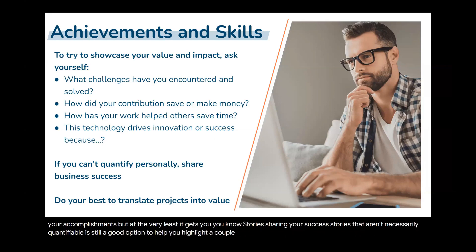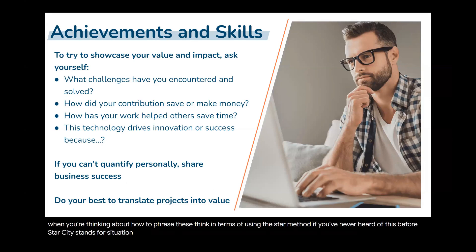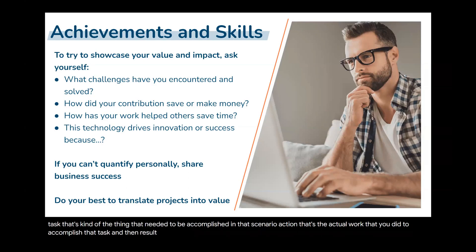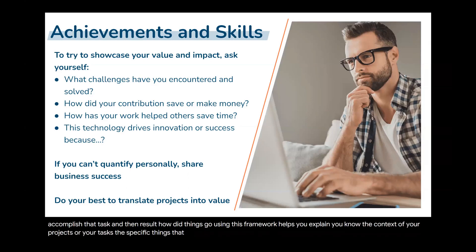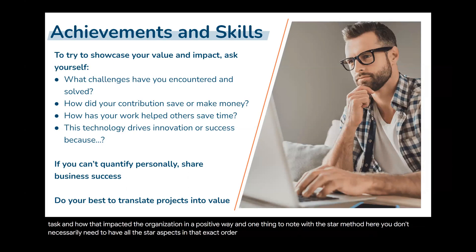When phrasing your accomplishments, think in terms of the STAR method: Situation — background information setting up the scenario; Task — what needed to be accomplished; Action — the actual work you did; Result — how things went. Using this framework helps you explain the context of your projects, the specific things that needed to be done, the work you did, and the positive outcome and organizational impact. You don't need all STAR aspects in exact order, but including all elements ensures your examples are comprehensive and impactful.